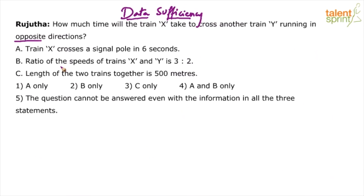Now what is directly or indirectly given in the main question? He is asking us to find out the time that train X will take to cross train Y running in opposite directions. What is important here is the trains are running in opposite directions.